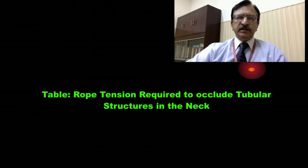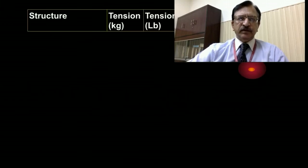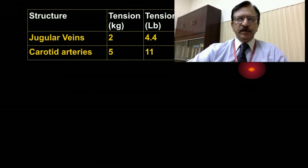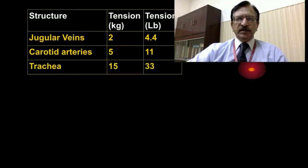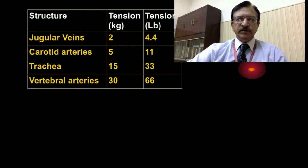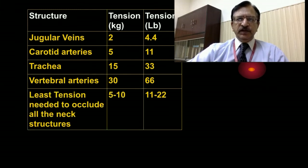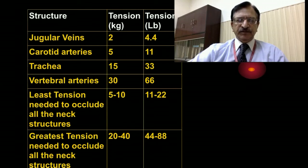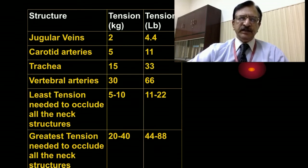In terms of tension: 2 kg causes approximately 5.4 pounds of tension. Carotid arteries need 5 kg, causing 18 pounds of tension. The trachea needs 15 kg, causing 33 pounds of tension. Vertebral arteries need 30 kg, causing 66 pounds of tension. The least tension needed to occlude the jugular veins and carotid arteries is 5 to 10 kg, causing 10 to 22 kg of tension. The greatest tension to occlude all structures is approximately 30 kg, ranging from 20 to 40 kg.